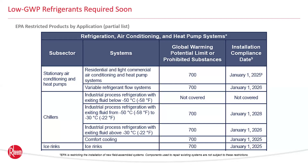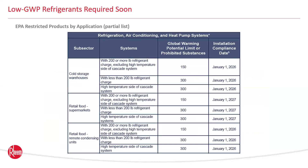The refrigerant alternatives below 700 GWP for air conditioning and heat pumps are primarily Class A2L refrigerants. Even more stringent EPA restrictions apply by application, requiring as low as 150 and 300 GWP in refrigeration applications in 2026 and 2027. Cold storage warehouses, supermarkets, and remote condensing units are all going to very low GWP limits in the near term.